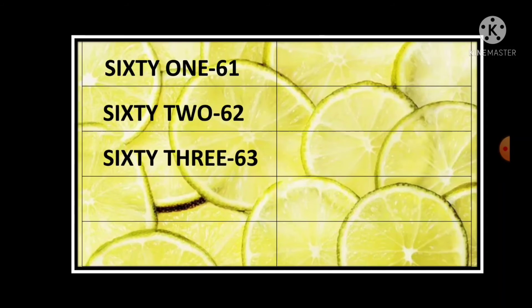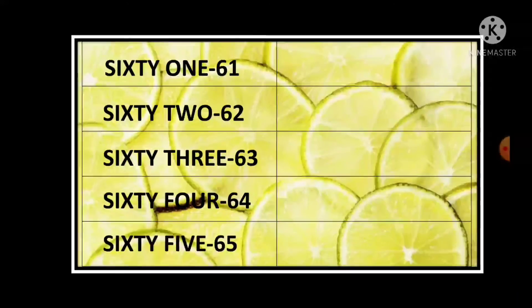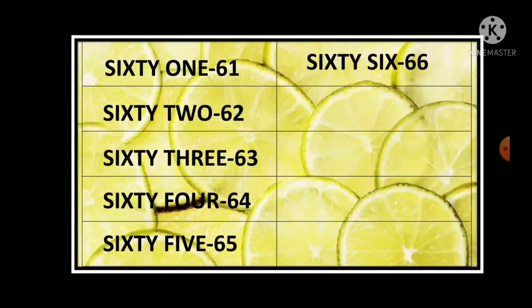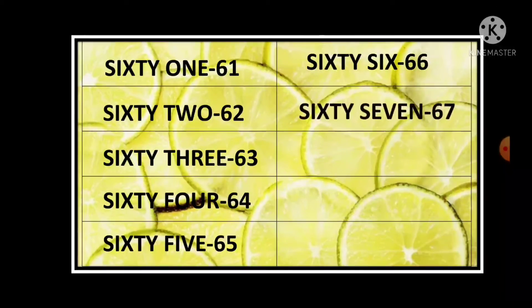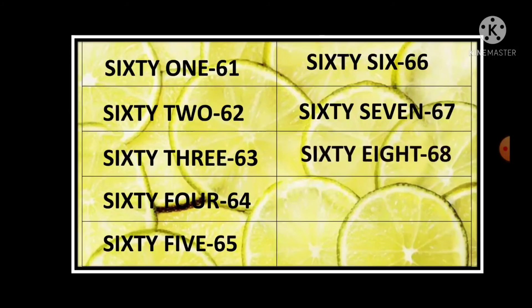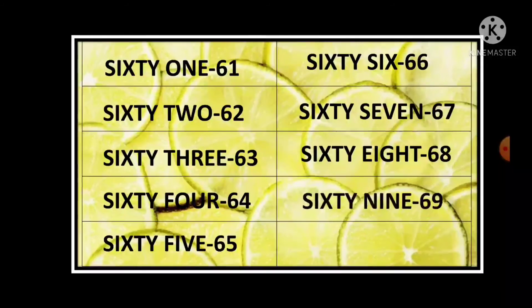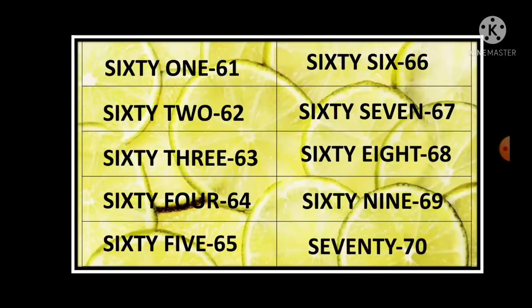And now start 61, 62, 63, 64, 65, 66, 67, 68, 69, 70. Write 7 spelling and add just T-Y. S-E-V-E-N-T-Y, seventy. Now continue.